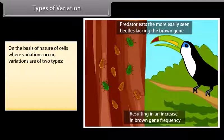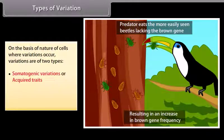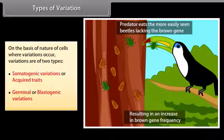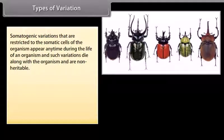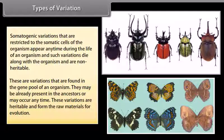On the basis of nature of cells where variations occur, variations are of two types: somatogenic variations or acquired traits, and germinal or blastogenic variations. Somatogenic variations are restricted to the somatic cells of the organism, appear any time during life, and such variations die along with the organism and are non-heritable. Germinal variations are found in the gene pool of an organism, they may be already present in ancestors or may occur any time. These variations are heritable and form the raw materials for evolution.